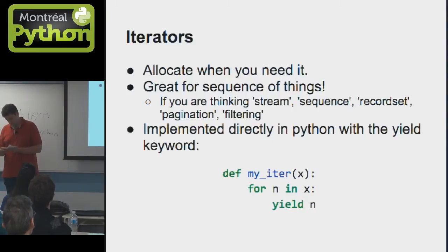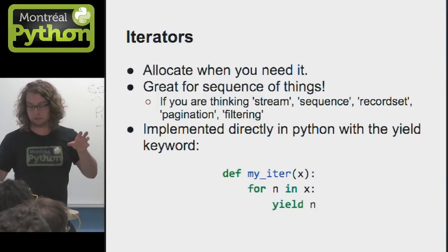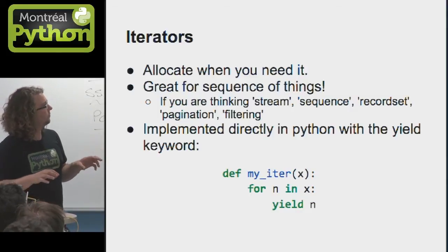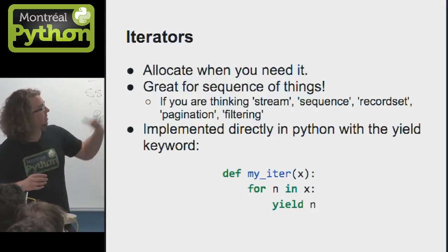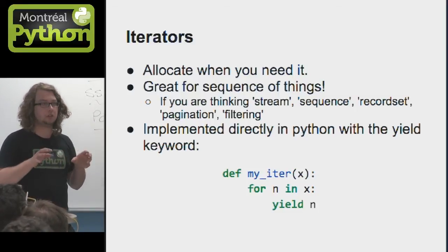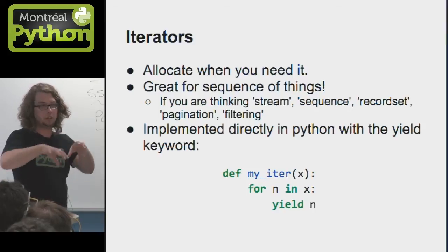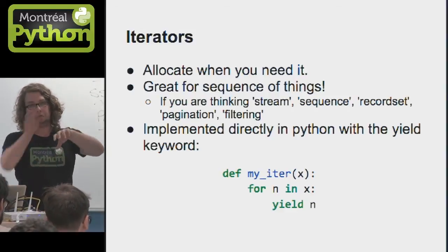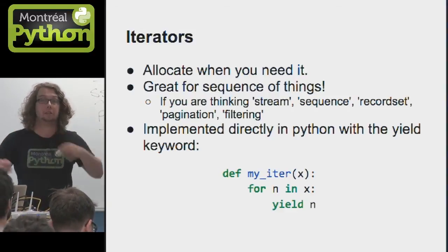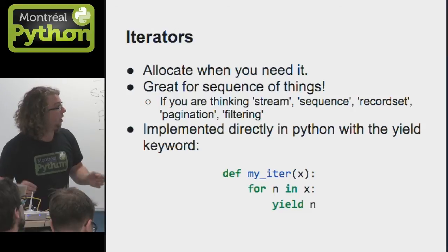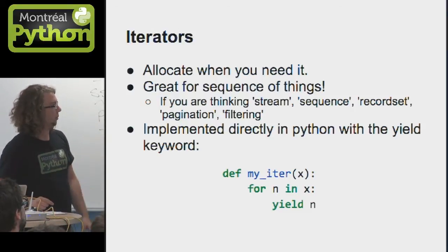First off, we're going to be talking about iterators. You all know about our magnificent yield keyword in Python, which allows us to have quickly an iterator. What an iterator is, when you're thinking about sequence, stream, record set, filtering or pagination, it will allow you to read a piece of data and only allocate this data and use it. So if you're reading a file, instead of putting all the file in memory, you're going to be reading first lines or a number of bytes each time. By using the yield keyword, you're going to be able to return a generator, which will be used in Python to iterate over it.